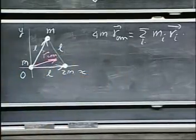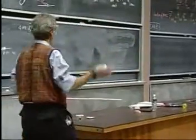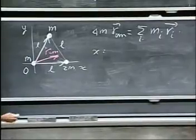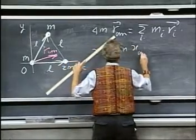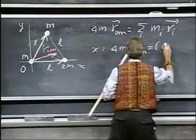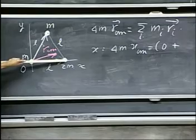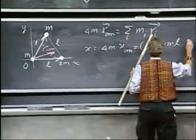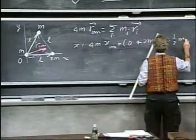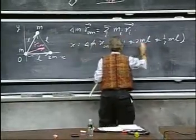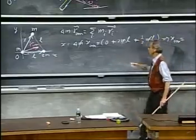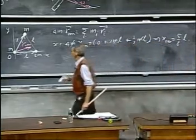Now, this is a vectorial equation, and whenever we have a vectorial equation, it sometimes pays off to split it into two components, a y and an x component. And so in the x direction, of course, the same equation holds for the x components of these vectors. So now I have that 4m times the x component of the center of mass equals this mass times the x component of its position vector, which is zero, plus this mass, which is 2m, times the x position, which is l, so plus 2m times l, plus this mass times the x component of this mass, which is 1 half l. So that gives me plus 1 half m times l. My m goes, and so I get that x center of mass equals 2 and 1 half, divided by 4, that is 5 eighths l. So we were not too far off where we put it.